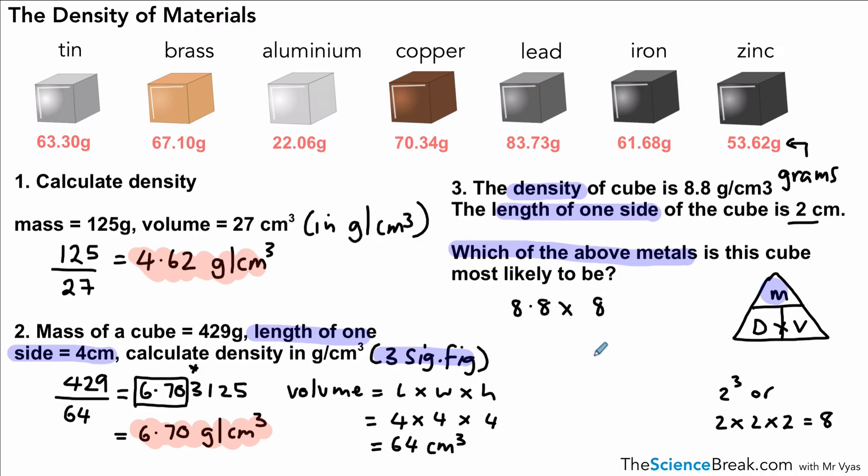So 8.8 times 8, that gives us an answer of 70.4 grams. Remember, it's a mass, so it's grams. Which one of those metals is going to be? Well, the closest one there is copper. Now our value is not exactly 70.34, but the question does say which one is it most likely to be, and all the others are very far away from 70.4.